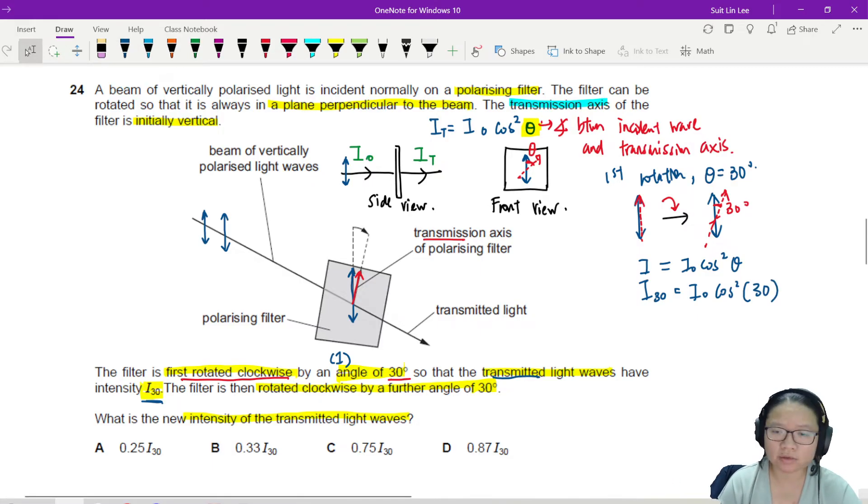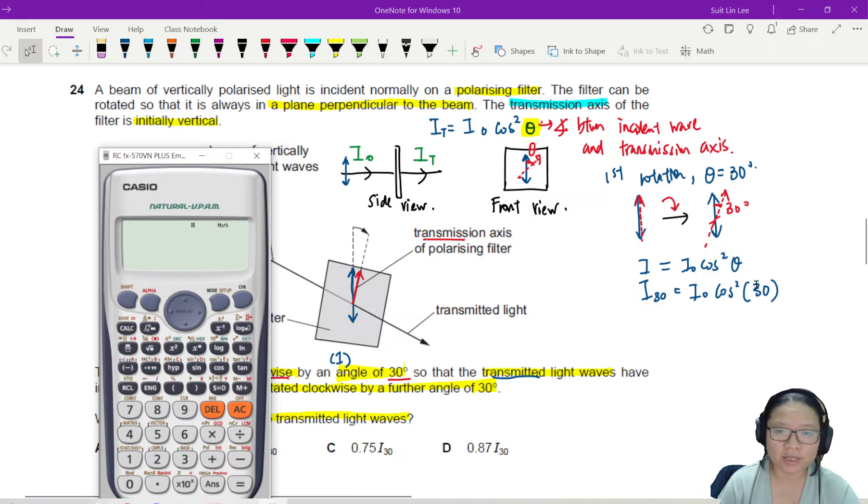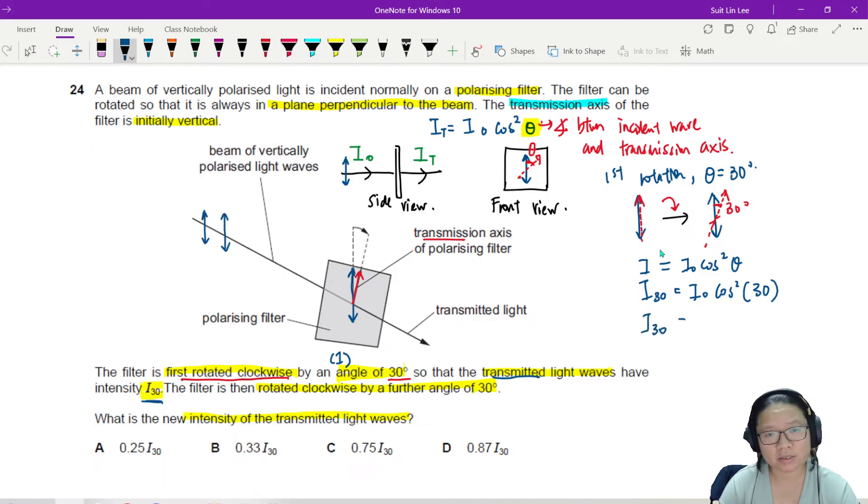So a PSA here for you. Let me pull out my friend Casio, the calculator. Here's the PSA. When we write like this, what we're actually saying is we are taking square of cos. So it's cos 30 square. Square the whole thing. You press like that for safety because it depends on the setting of your calculator. This is 3 over 4. So I'll write this one as I 30 is 3 over 4 I naught. This is first rotation.